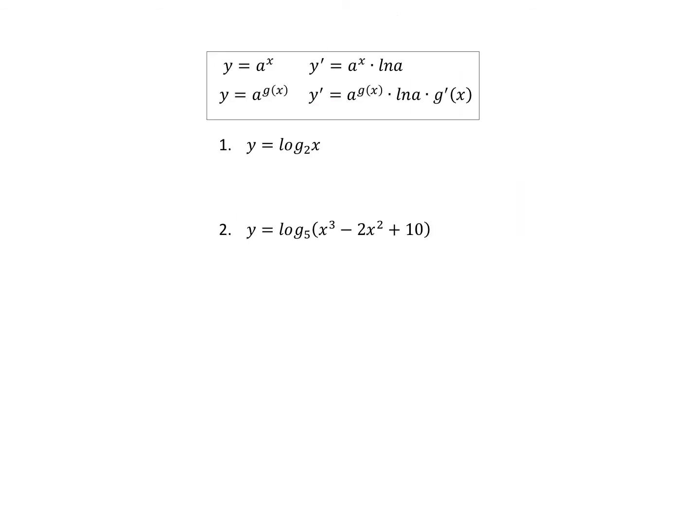Other exponential derivatives: for y equals a to the x, the derivative is a to the x times ln(a). If the exponent is g(x), then the derivative is a to the g(x) times ln(a) times the derivative of g(x). For example, y equals log base 2 to the x: y prime equals 1 over (ln(2) · x).